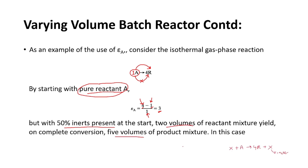Consider the reaction X + A → 4R + X, where X is an inert gas. Being inert, X does not react with A but is present in both the reactant and product feeds. On the reactant side, the total moles are 1 (A) + 1 (X) = 2. On the product side, you have 4 moles of R plus 1 mole of inert gas X, giving 5. So εa = (5 - 2) / 2.